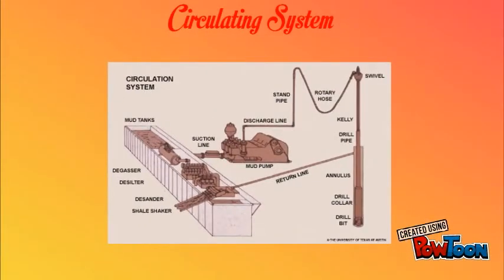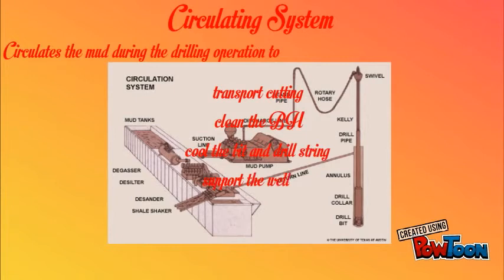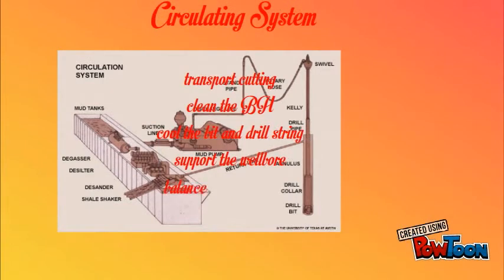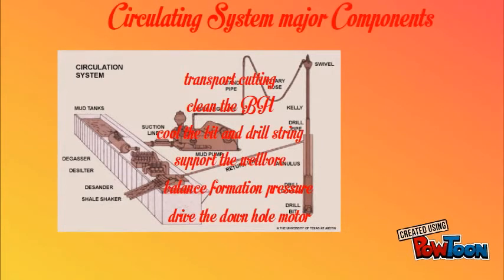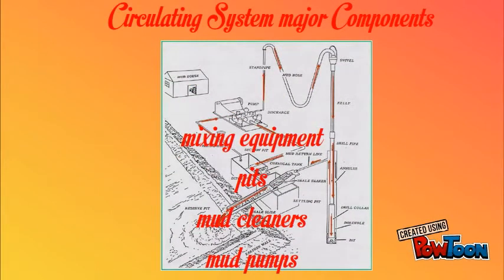By circulating the drilling mud through the drilling operation, the circulating system has the function of transporting cuttings to surface, cleaning the bottom of the hole, cooling and lubricating the bit and drill string, supporting the wellbore, balancing the formation pressure, providing hydraulic power to the drill bit, and driving the downhole motor. Its major components are mixing equipment, pits, mud cleaners and mud pumps.